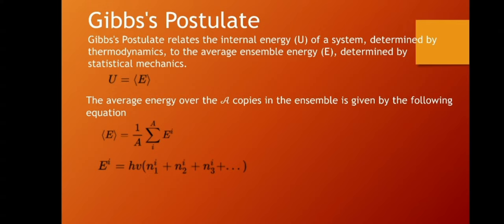Gibbs postulate relates the internal energy — U — of a system determined by thermodynamics to the ensemble energy — E — determined by statistical mechanics. This postulate also says that internal energy is equal to the average ensemble energy. The average energy of the A copies in the ensemble is given by the following equation, where E is expressed in sigma notation, or simply the summation.